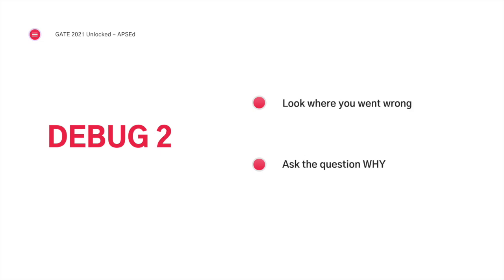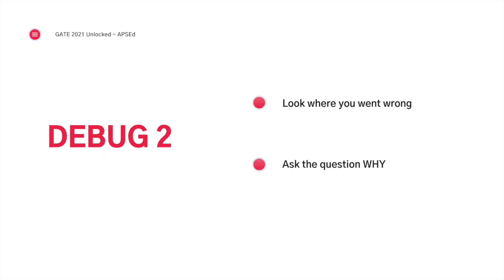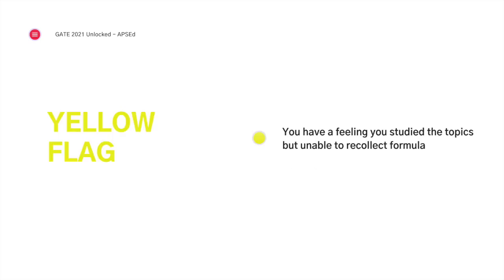After comparing the solution, look where you went wrong and ask the question: why? Why did you go wrong? It could be that you knew the formula but still did not use it — probably you did not know how to apply it. Or you were confused between two approaches. Or you did not know anything at all. These are red flags. It is very important to ask yourself why you went wrong in this particular part. Sometimes you feel like you have studied the topic but you are totally not able to recollect the formula — that means you have to focus on revision.